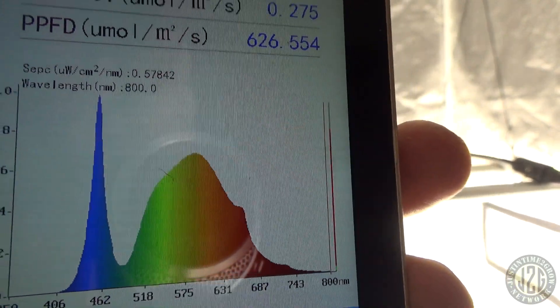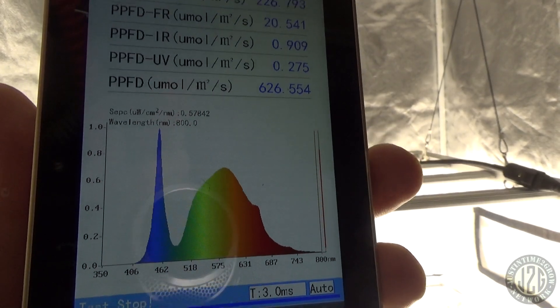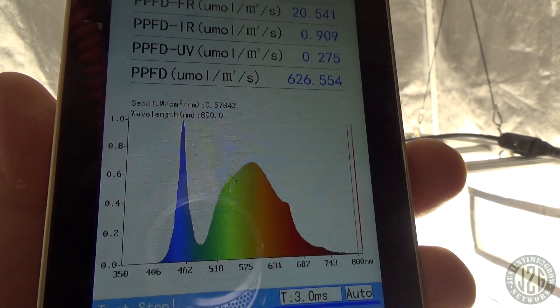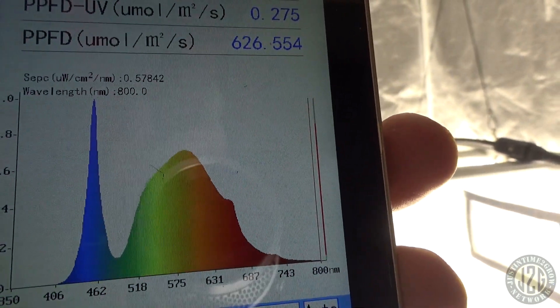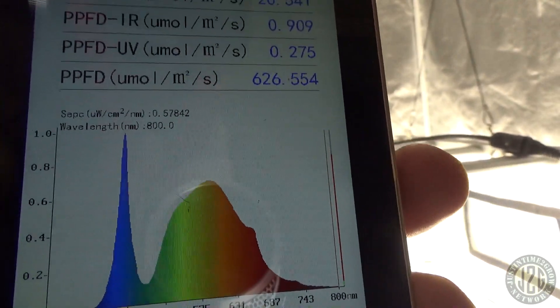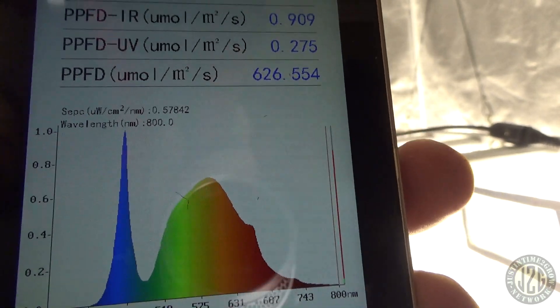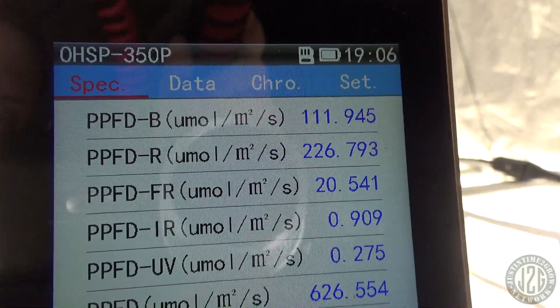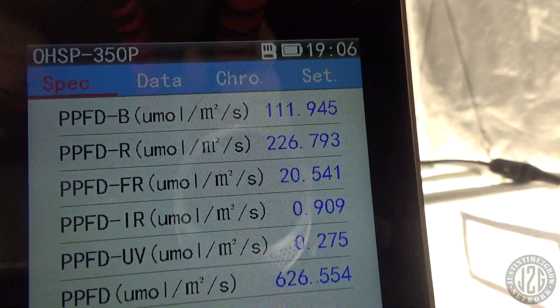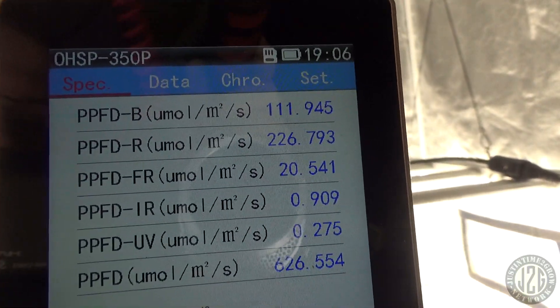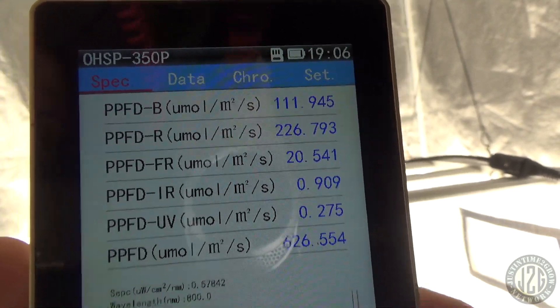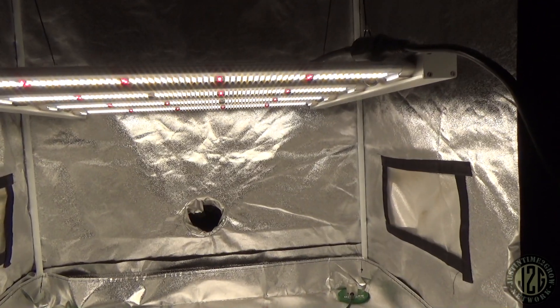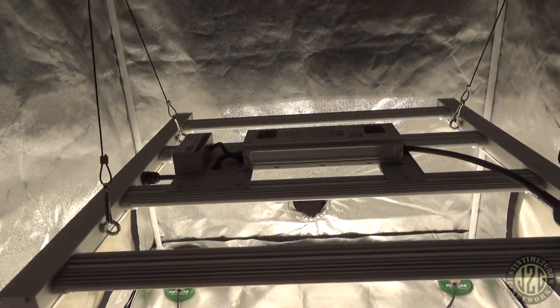Definitely could use a little bit more red in my opinion, definitely could. But not bad as far as overall power. It definitely could be a very good veg or flower light. It's very full spectrum, it's got the red bumps, so I mean it is going to be able to flower, don't get me wrong, but it could have more. You can see the mix of red to blue, you're like two to one, just like what I was saying, like a two to one ratio red to blue. So yeah, pretty slick.